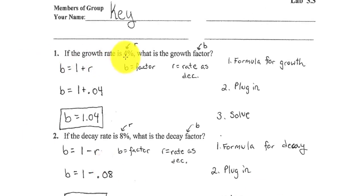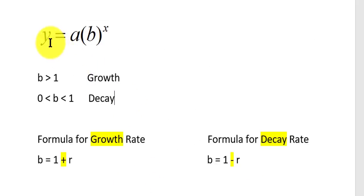Question one, if the growth rate is 4%, what is the growth factor? So whenever you see the percent, that means they're giving you the R. And we know that the formula for growth rate is B equals 1 plus R. So if you remember, the exponential formula is Y equals AB to the X.